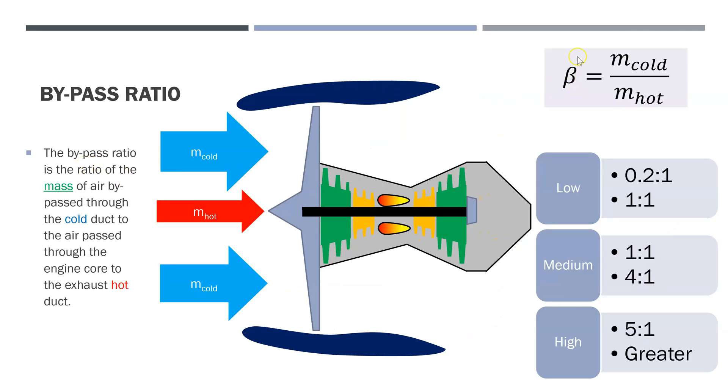So the bypass ratio β is that mass of the cold stream air, so here and here, compared to the mass of the hot stream air.